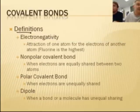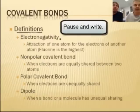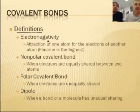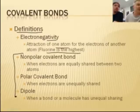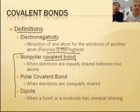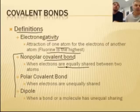To understand this we need a few more definitions — this is probably a pause-and-write-down moment. Electronegativity, which you may recall from the atomic theory unit, is the attraction of one atom for the electrons of another. Remember, fluorine is the highest. The smaller the atom, the stronger it is. Now we have some new terms. A non-polar covalent bond is one where the electrons are equally shared between two atoms — they each get an equal amount.